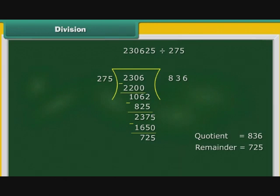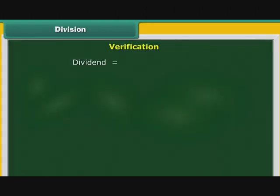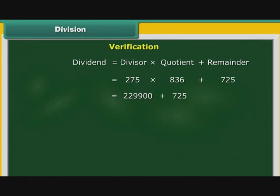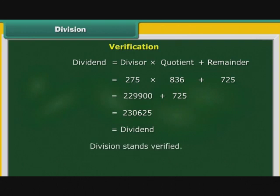Let us verify the division using the formula: Dividend equals divisor multiplied by quotient plus remainder. That is 275 multiplied by 836 plus 725, which equals 229900 plus 725, which equals 230625. This equals the dividend. Therefore, the division stands verified.